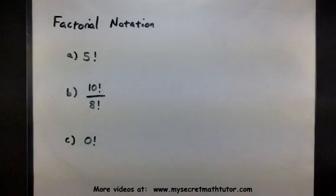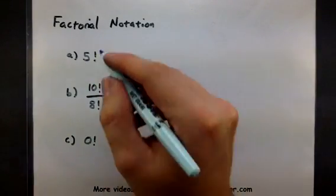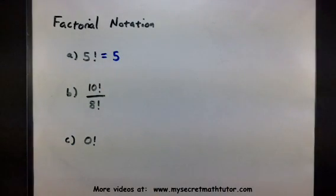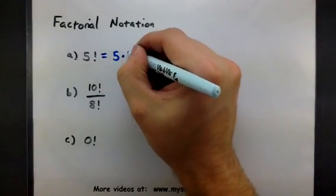And here's basically what it means. If you see an exclamation mark next to the number, like this 5 here, it means to start with that number, the 5, and multiply by 1 less every time, until you eventually get to 1.